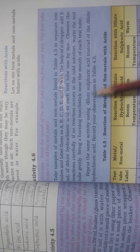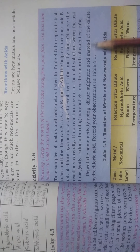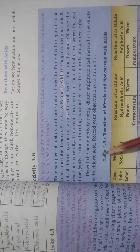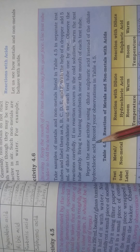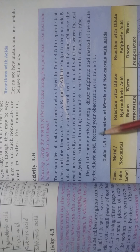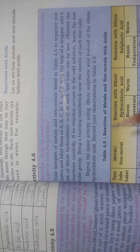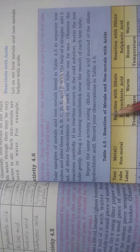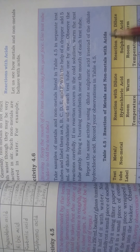Repeat the same activity using dilute sulfuric acid instead of dilute hydrochloric acid. First we used hydrochloric acid, now take 5 ml of sulfuric acid drops. Record your observations in Table 4.5 - reaction of metals and non-metals with acids.